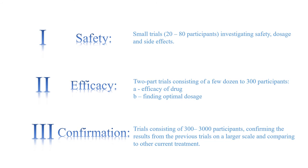Phase 2 is a two-part trial which normally consists of a few dozen to 300 participants. In part A, the trial looks at the efficacy of the drug, and in part B, the trial looks at finding the optimal dosage.